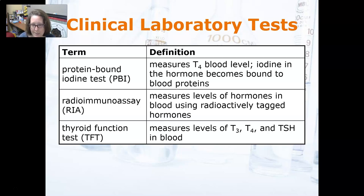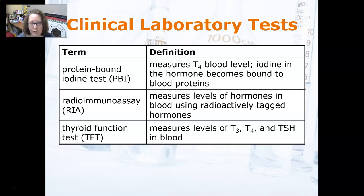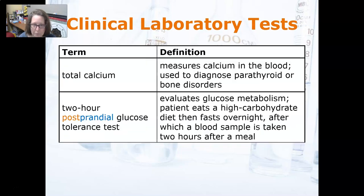In a Radioimmunoassay, radioactively tagged hormones are used to measure the level of hormones in blood. This is usually done to assess thyroid function in someone who is hyperthyroid — specifically for Graves' disease — using radioactively tagged iodine.